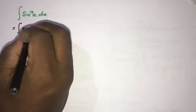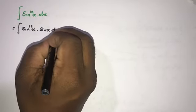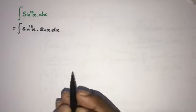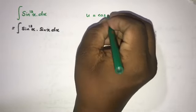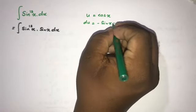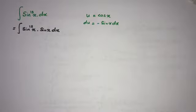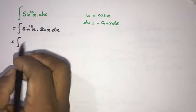First, we can write this as sine to the 12th power of x times sine of x dx. Now, for sine of x dx, we can take u equal to cosine of x using the substitution method. Differentiating, du is equal to minus sine of x dx.